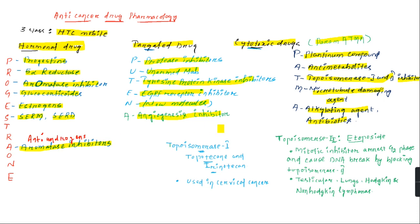Let us discuss topoisomerase inhibitors. Topoisomerase 1 inhibitors include topotecan and irinotecan, basically used in cervical cancer. Topoisomerase 2 inhibitors include etoposide and teniposide. These are mitotic inhibitors acting at the G2 phase of the cell cycle, causing DNA breakage by blocking topoisomerase 2 enzyme. This class is employed in testicular cancer, lung cancer, and Hodgkin's and non-Hodgkin's lymphoma.